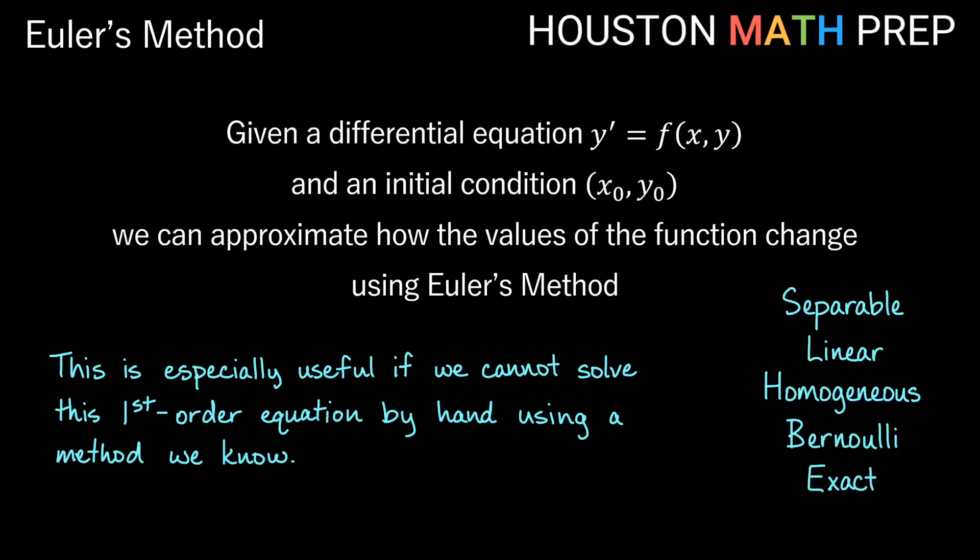And we say using some method we know, we're talking about identifying if the equation is separable, linear, do we solve it using a substitution where it's homogeneous or Bernoulli, or is it some exact first order equation? We can certainly use Euler's method even if it is one of these, but if we can't solve by hand often a numerical approximation like Euler's method might be one of the only ways for us to go about analyzing the differential equation.